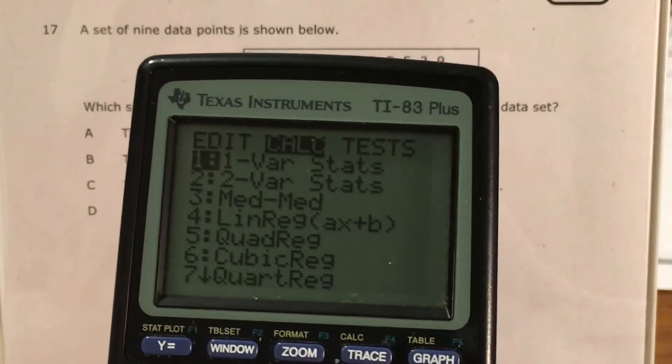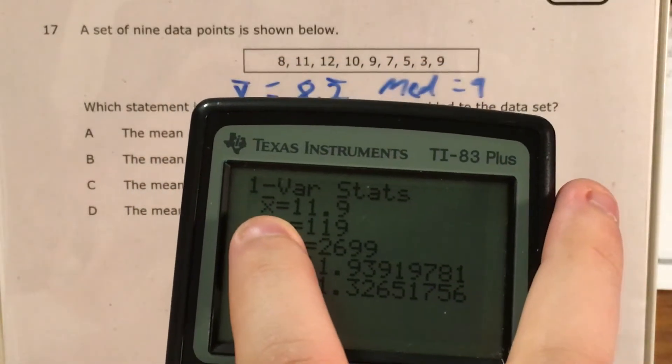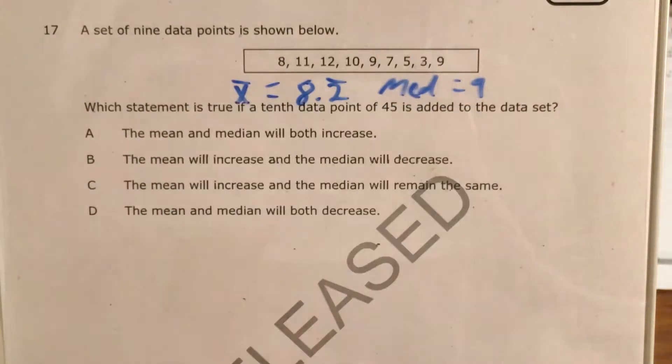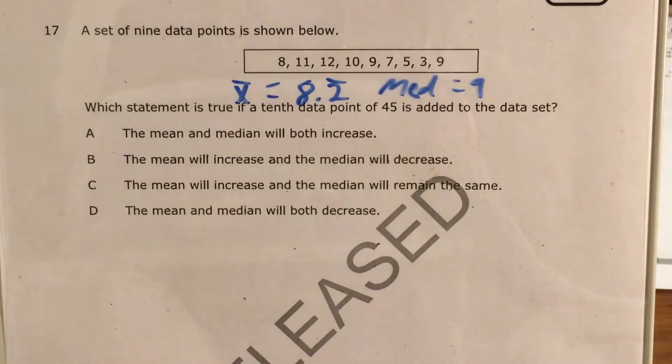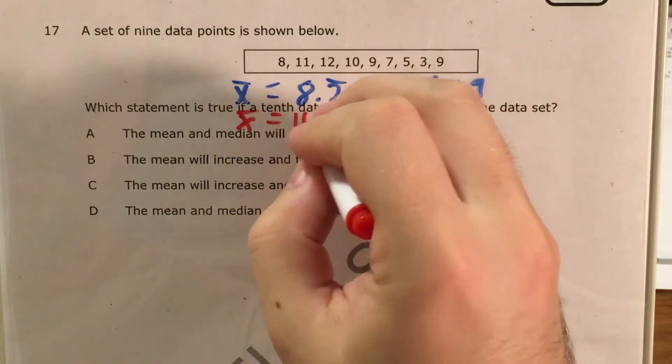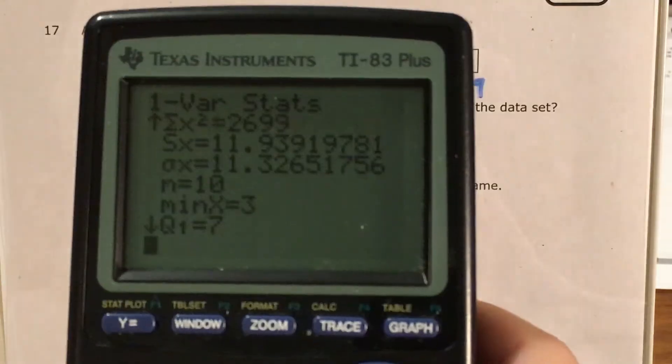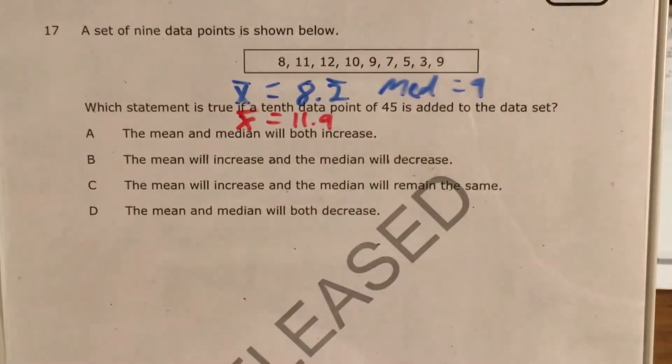I go back to stat, calc, one variable stats, and here's what it gives me. Here's my new mean, 11 and 9 tenths, 11.9. I keep going down until I find my median. My median is still 9.